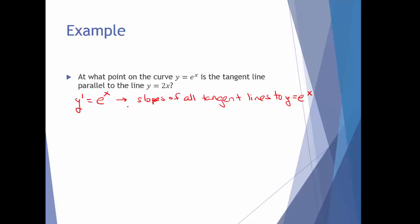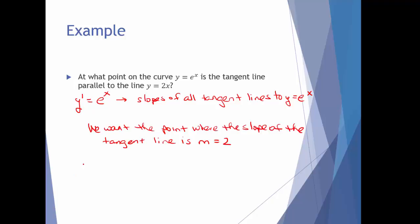Since the derivative represents the slopes of all tangent lines, we need to figure out which one we're talking about. We want the tangent line parallel to y equals 2x — in other words, we want the point where the slope of the tangent line equals the slope of that line, which is 2. So we set e to the x equal to 2.